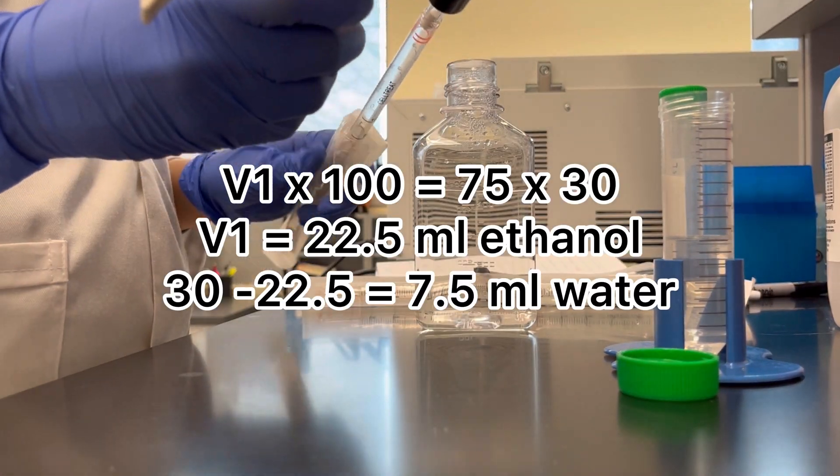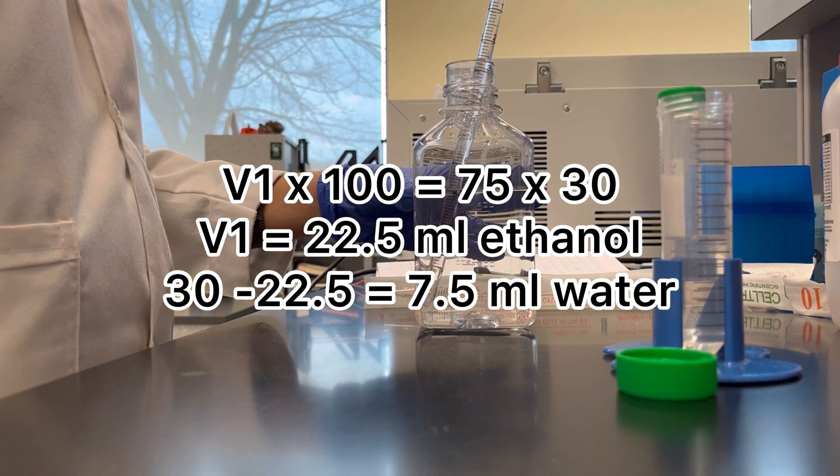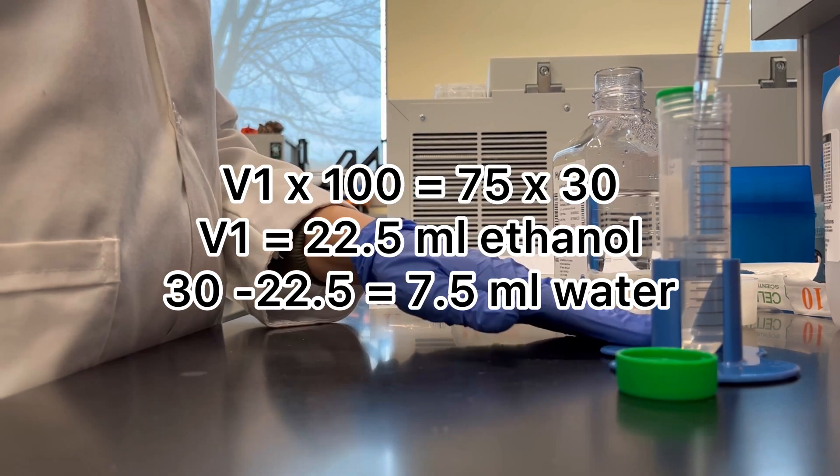Here I am making 30 ml of 75% ethanol from pure ethanol.